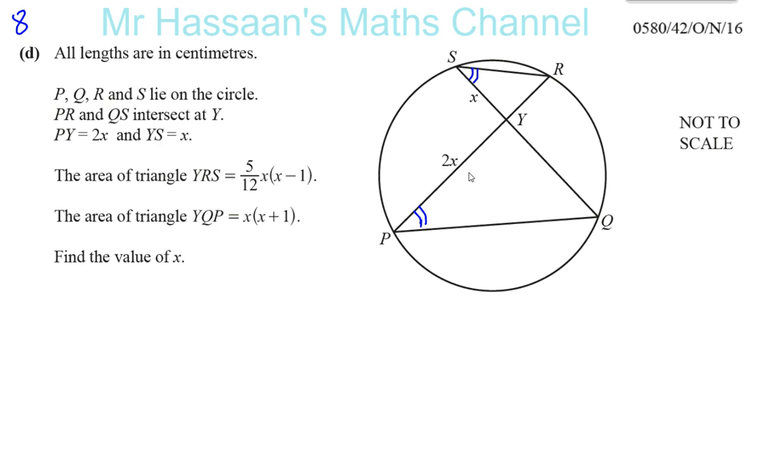Similarly, I know that angle SRP is the same as angle SQP. R and Q are both on the circumference, and S and P are also on the circumference. So the angles at R and Q are both standing on the arc SP. Here we have a pair of similar triangles. If you prove two angles are the same, the third angle is the same. We know this is the same as that - they're vertically opposite. So these are two similar triangles.